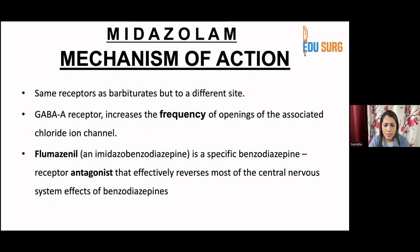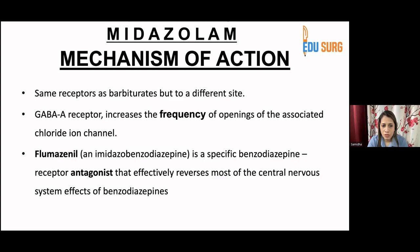Midazolam's mechanism of action involves the same receptors as barbiturates, but at a different site. The GABA-A receptor increases the frequency of openings of the associated chloride ion channel. Flumazenil, which is an imidazole benzodiazepine, is a specific benzodiazepine receptor antagonist that effectively reverses most of the CNS effects of benzodiazepines. So if you ever accidentally overdose or someone has been given too much in the ICU, this is the drug used to reverse it.